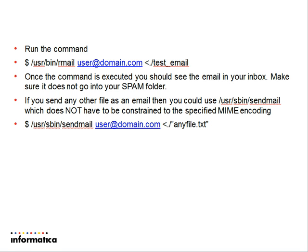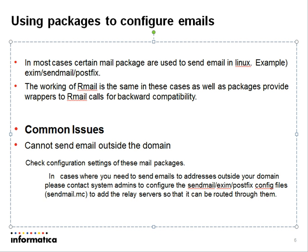If you just want to test if the SendMail program works, then you don't have to have a text file with the MIME encoding. You can just have any text file — even if it's empty, or with a simple test message — and run the SendMail program, and you should be able to receive it. In most Linux and Unix distributions, you will find packages used to configure and send emails. The most common packages include XM, SendMail, and PostFix. The working of R-Mail with these packages installed is pretty much the same, because most of these packages have a wrapper class used to wrap the R-Mail command and send out the email. This provides backward compatibility with R-Mail.